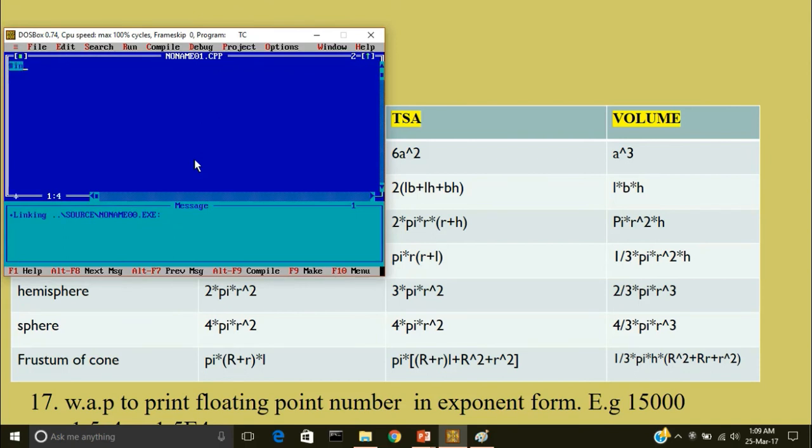Now include the header file. Hash include iostream.h. Hash include conio.h. Then we'll write void main. You do not write a semicolon after void main. Then clear screen. Now we have to display it in the form of, okay. So I'll write a statement. Float a is equal to 1.5 capital E 4, followed by a semicolon. Now cout value of a is less than less than a. Okay. Getch and close the program.